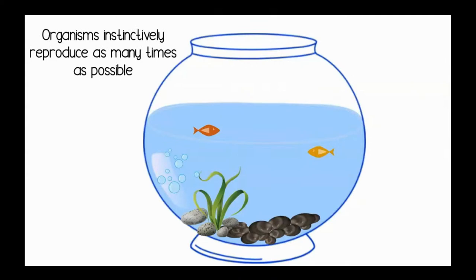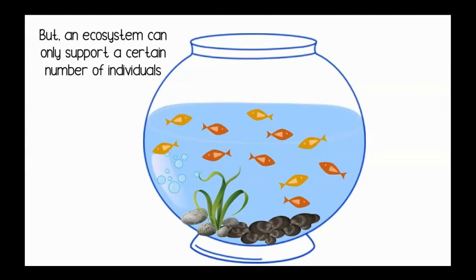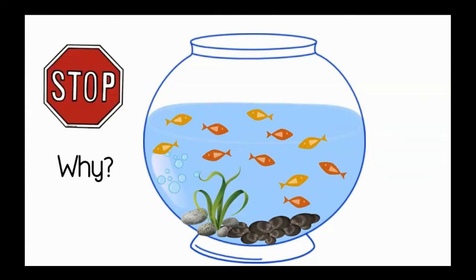Organisms instinctively reproduce as many times as possible. Populations have the potential to increase indefinitely. But an ecosystem can only support a certain number of individuals. Why?